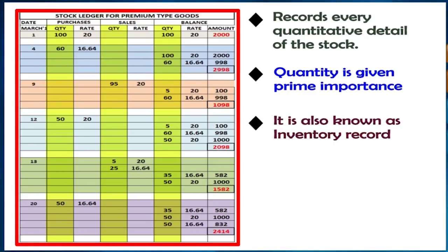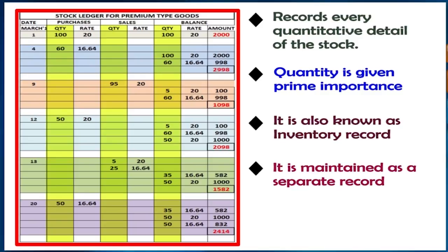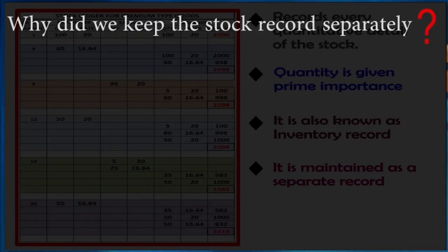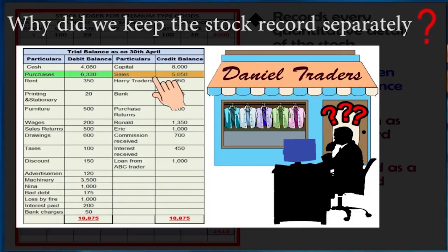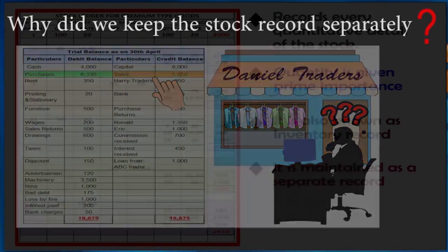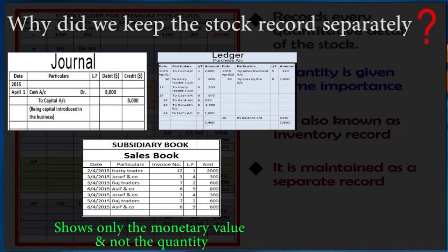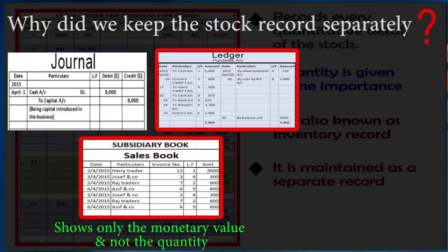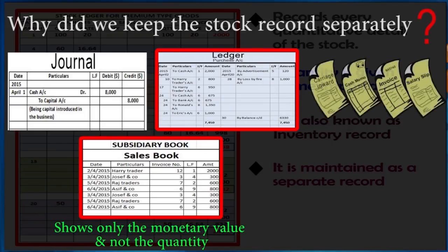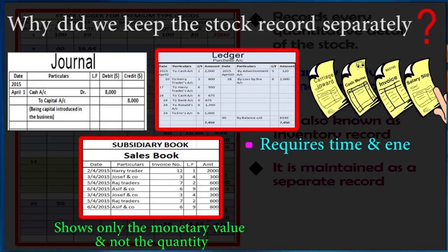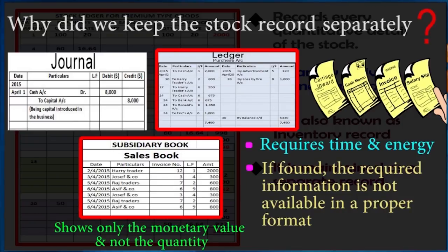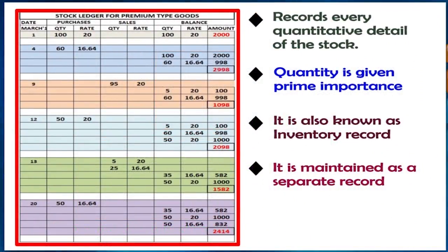The stock ledger account, also known as inventory records, is maintained as a separate record and is not included in our accounting books. Our basic accounting books like journal, ledger, or subsidiary books always reflect the monetary value of any transaction. If we need further details we could check ledgers or subsidiary books, and for extra information we would check source documents — but that consumes a lot of time and energy, and the required information is still not readily available in a proper format. Therefore, we prepare a separate stock inventory record.